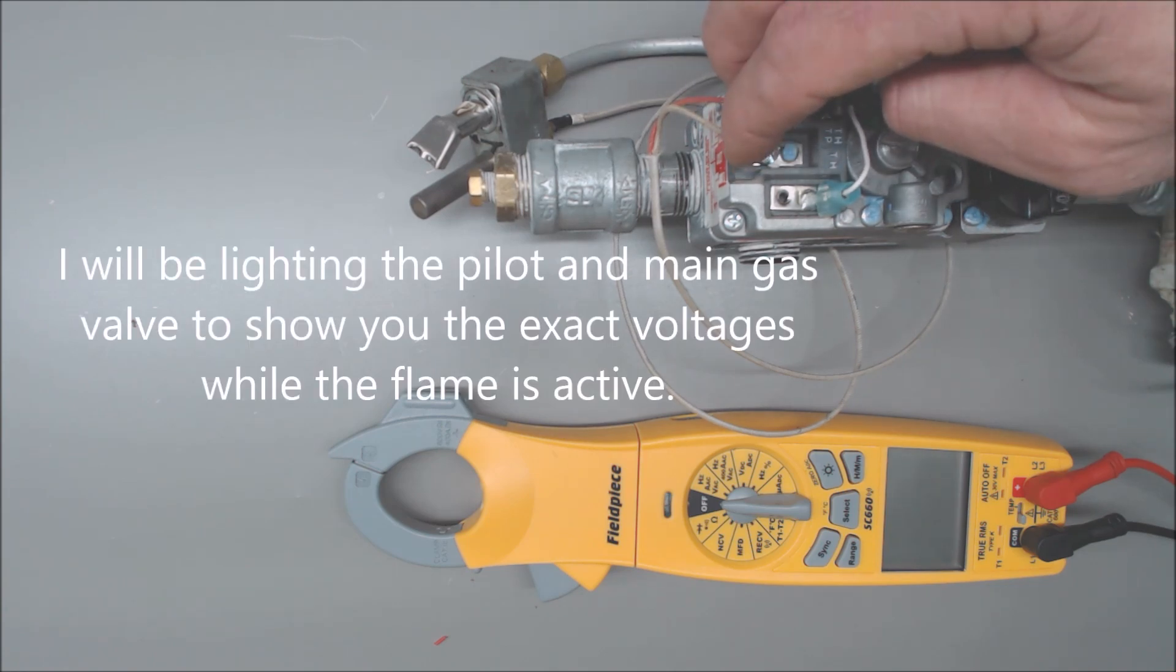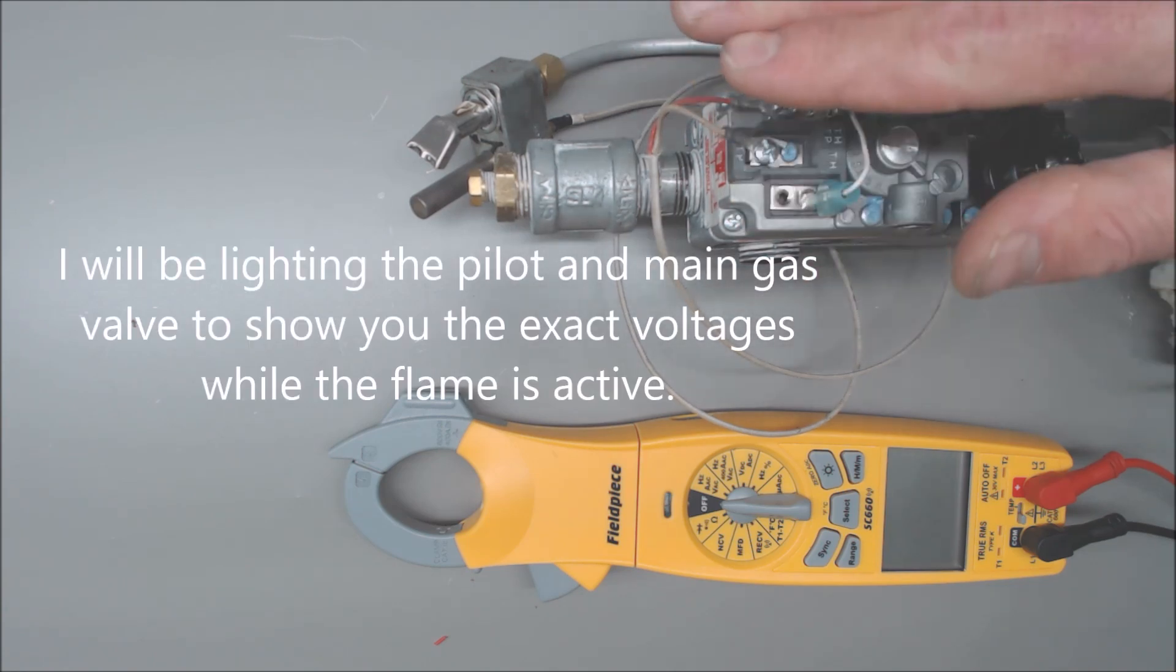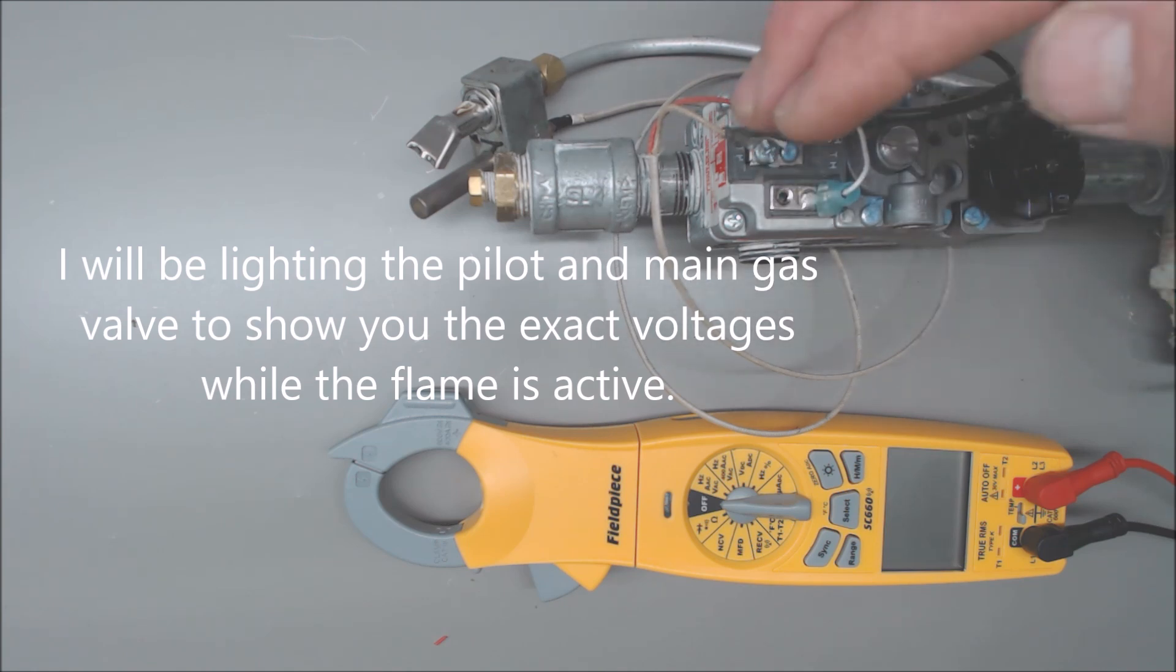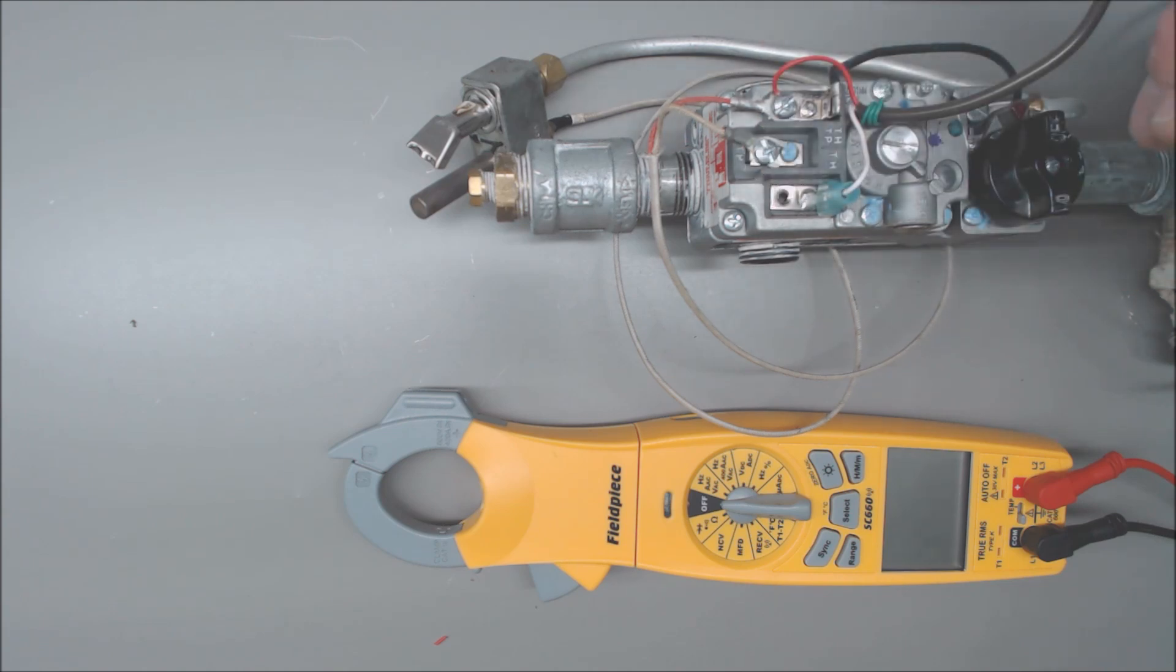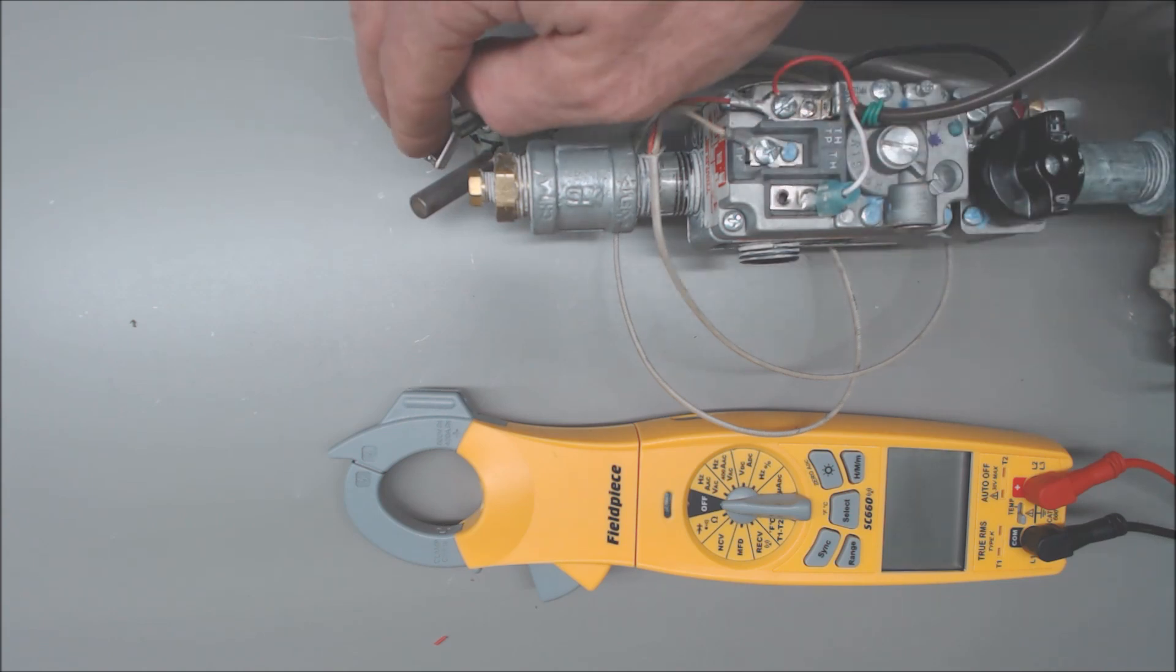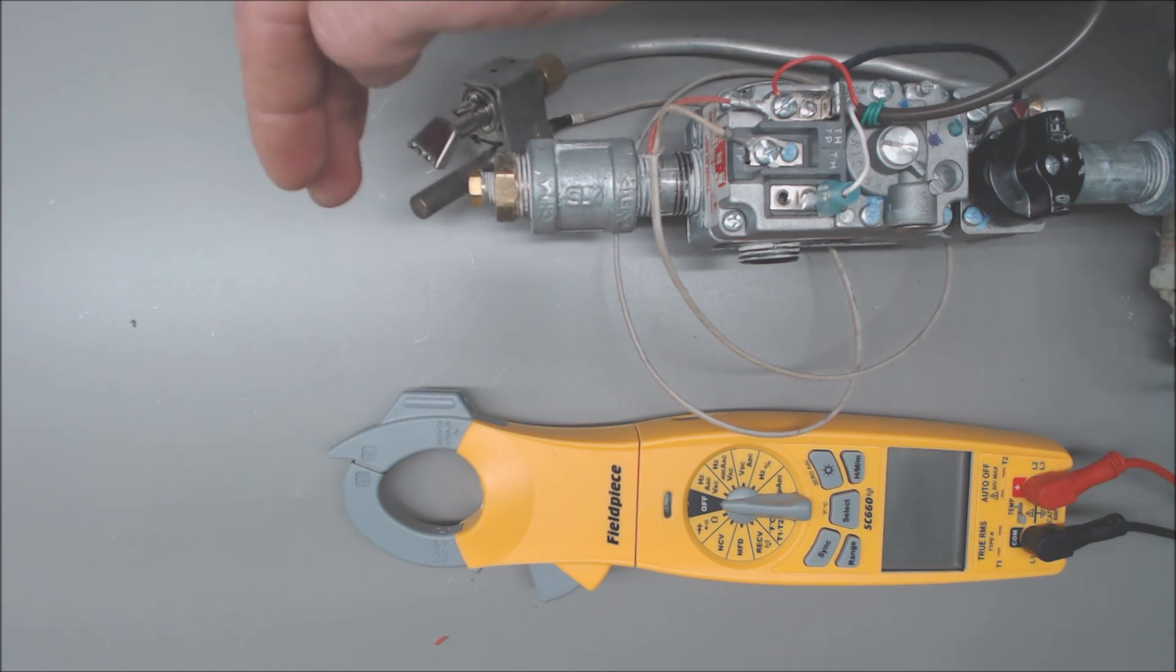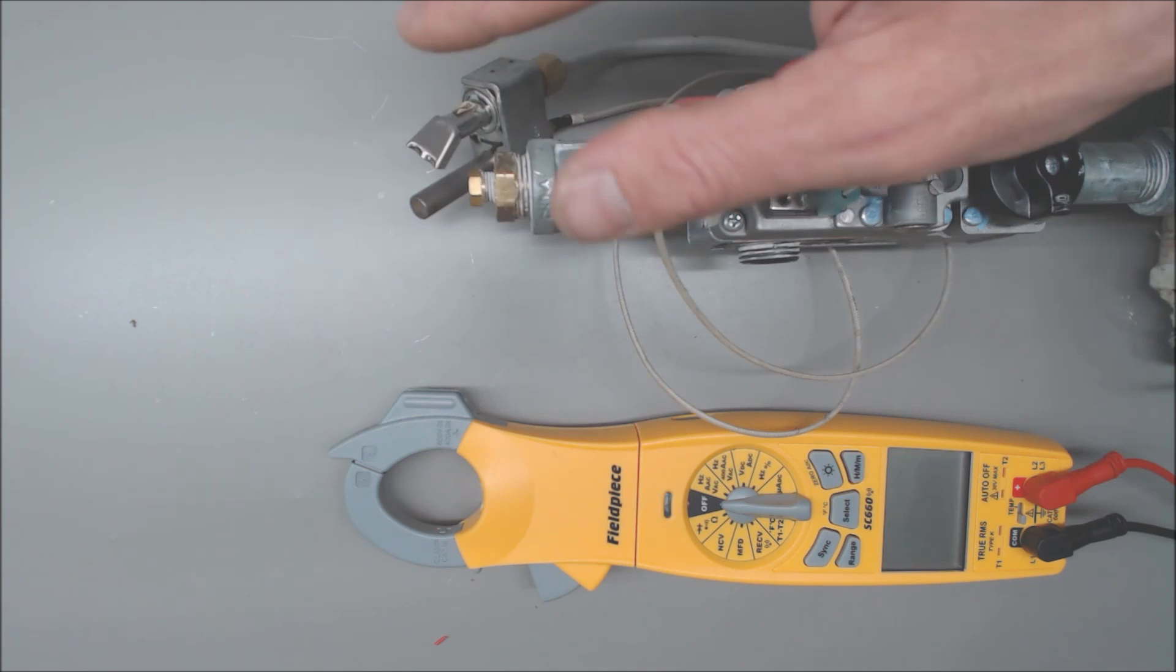On your pilot valve, you need at minimum 50 or 60 millivolts DC, but preferably more, around 100 to 200 millivolts DC. The whole point is that when the flame is heating your thermopile, you're able to generate around 750 millivolts or just a little bit lower.